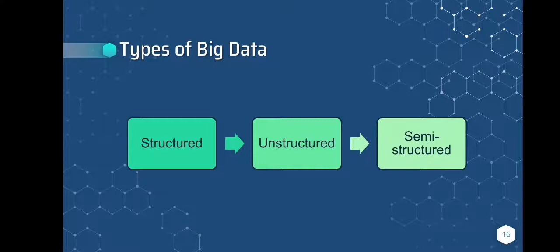What are the different types of big data? As mentioned earlier, we have structured, unstructured, and semi-structured data. Structured data is defined as any data that can be stored, accessed, and processed in a fixed format. Unstructured data is defined as any data with an unknown form or structure. Semi-structured data contains both types; it appears to be structured but is not formally defined in the same way that a table definition in a relational database management system is.